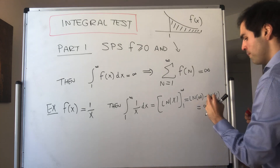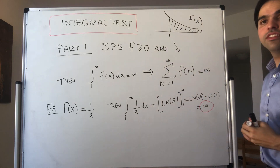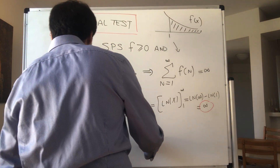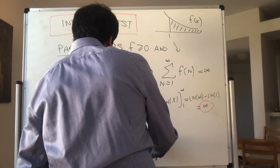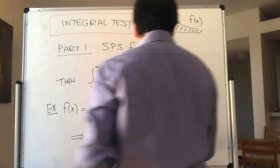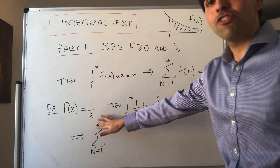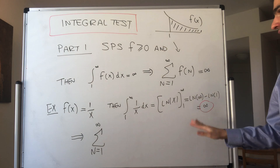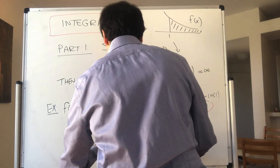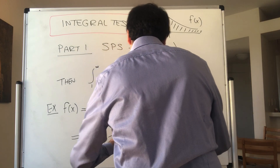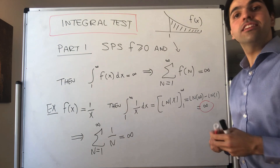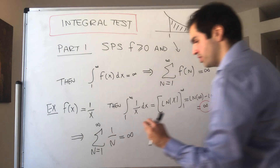Therefore, because this integral is infinity, it follows that the corresponding series — the sum from 1 to infinity of 1 over n, so f of n — is infinity. Therefore the harmonic series diverges.